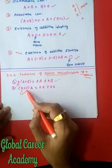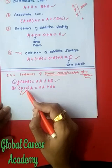Next, if we have two scalar quantities K and L and multiply them with matrix A, we can also individually multiply them — so (K+L)A = KA + LA.